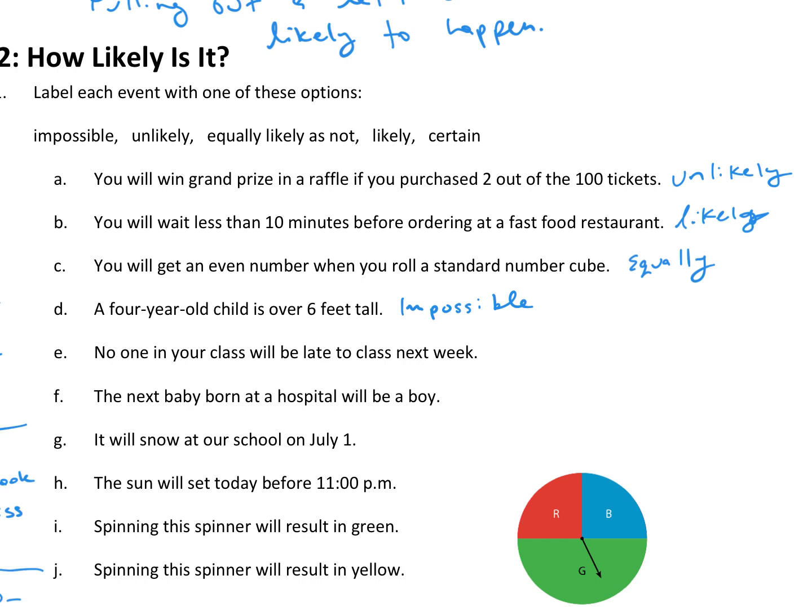So, E, no one in your class will be late to class next week. So, in this case, it's not impossible, because it is possible that everyone is on time. It's not for certain, because, again, someone could be late, but maybe not. This one, it kind of varies, but I would say it's probably equally likely as not.